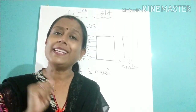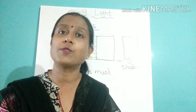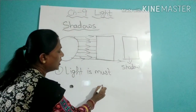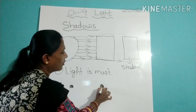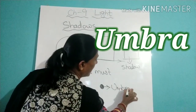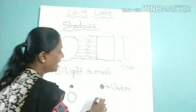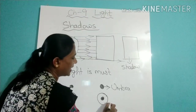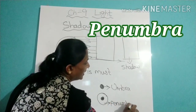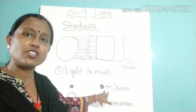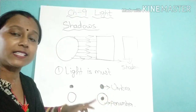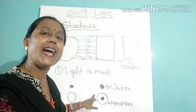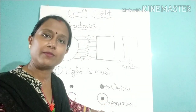Depending upon the source of light, two types of shadows are formed. When the source of light is small, only a small darker shadow is formed, and this dark shadow is known as umbra. But when the source of light is big, a centrally placed small darker area and at the surrounding a lighter darker area is formed, which is known as penumbra. That means when the source of light is big, a centrally placed darker area along with a light shade area is formed, which is known as penumbra.